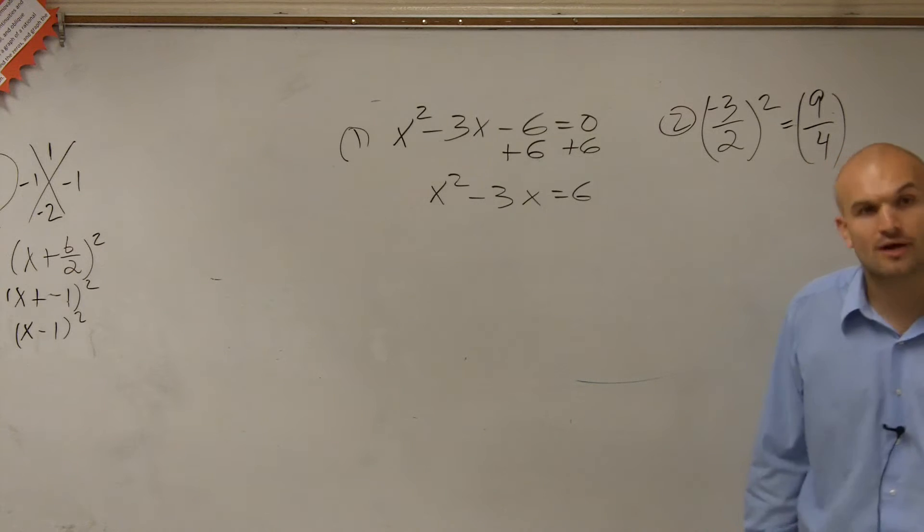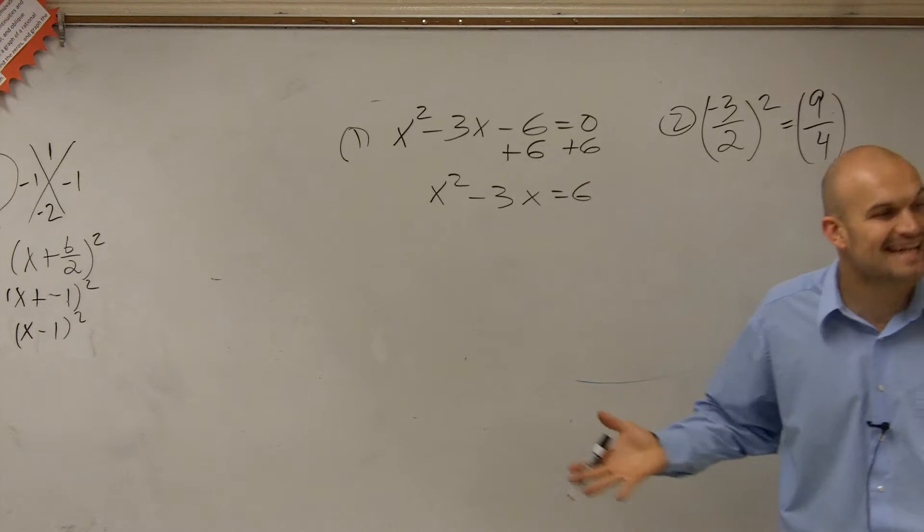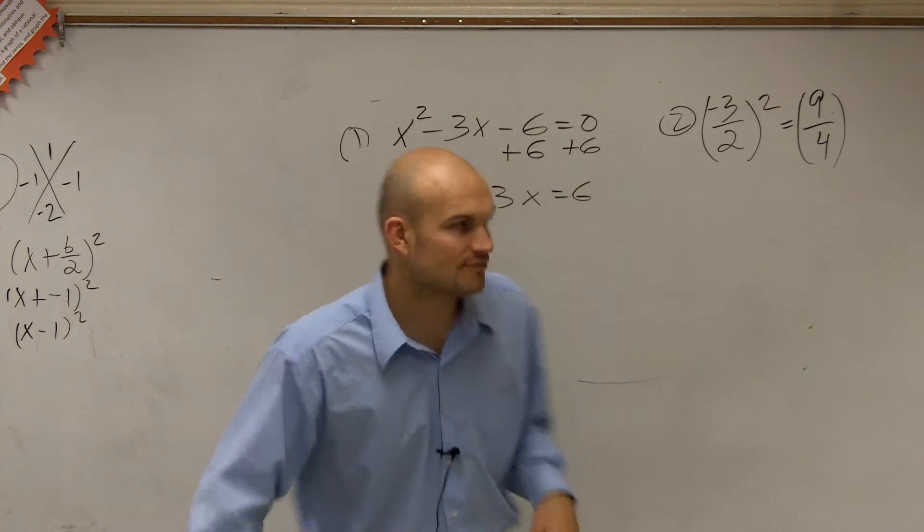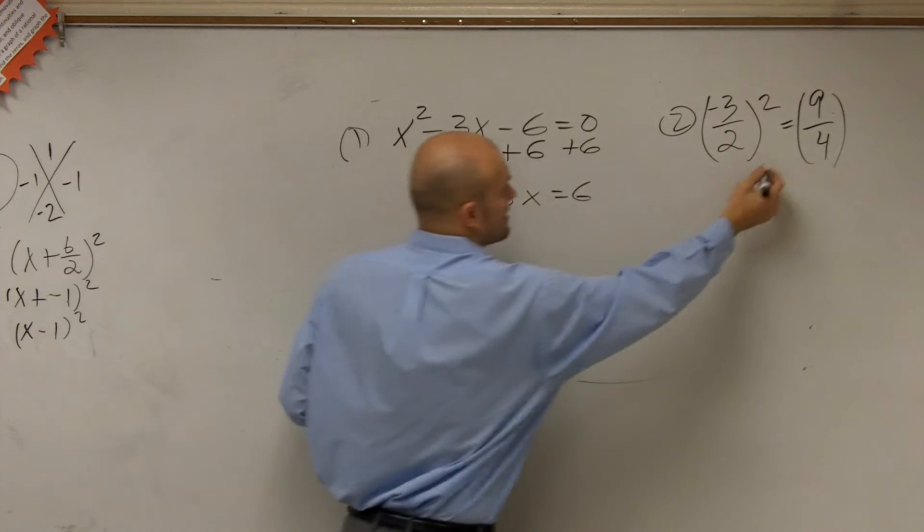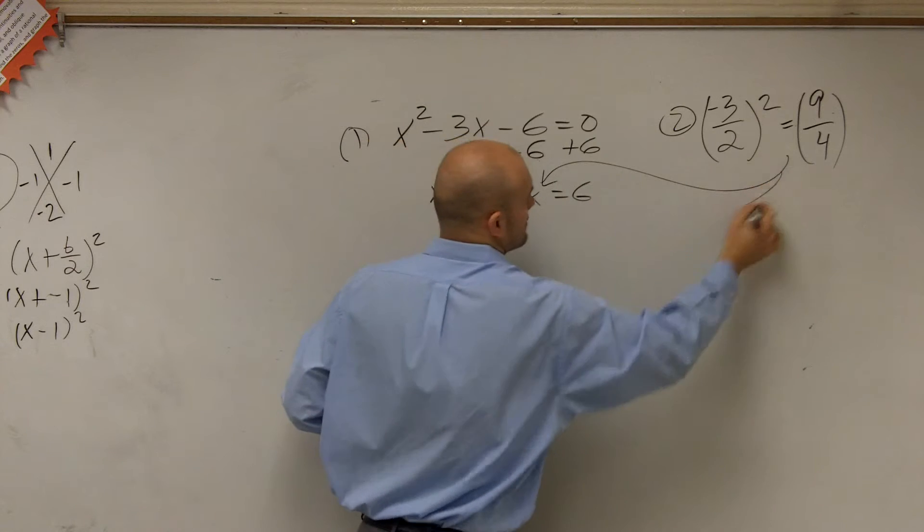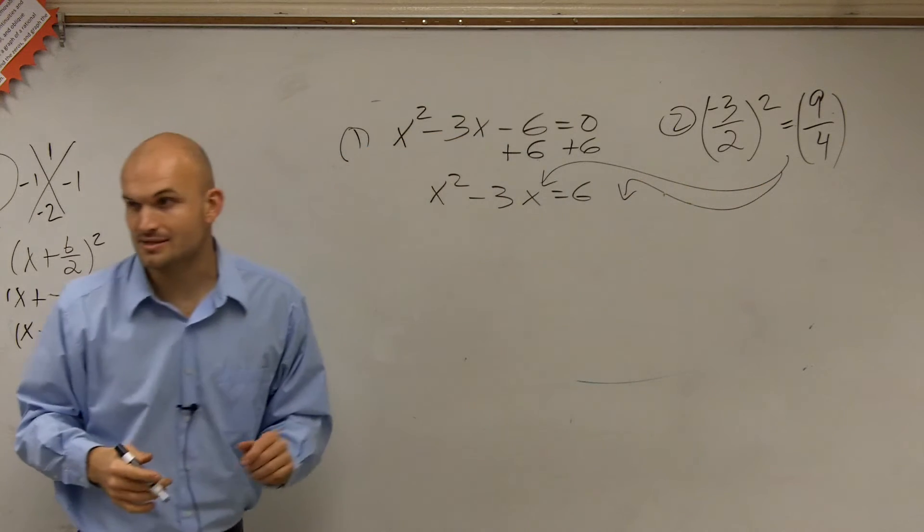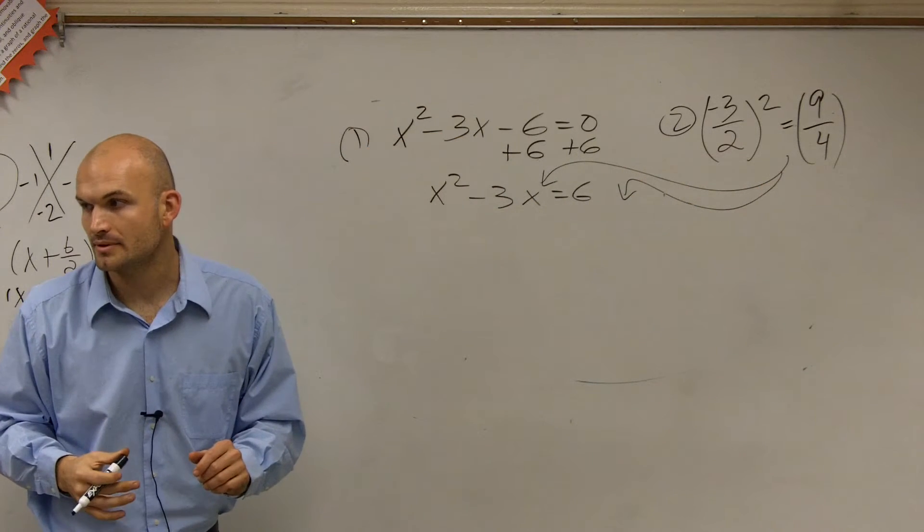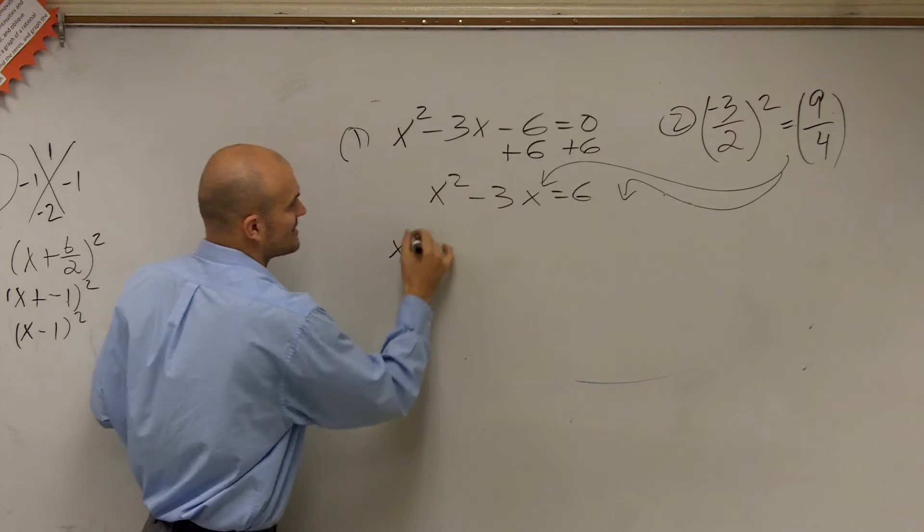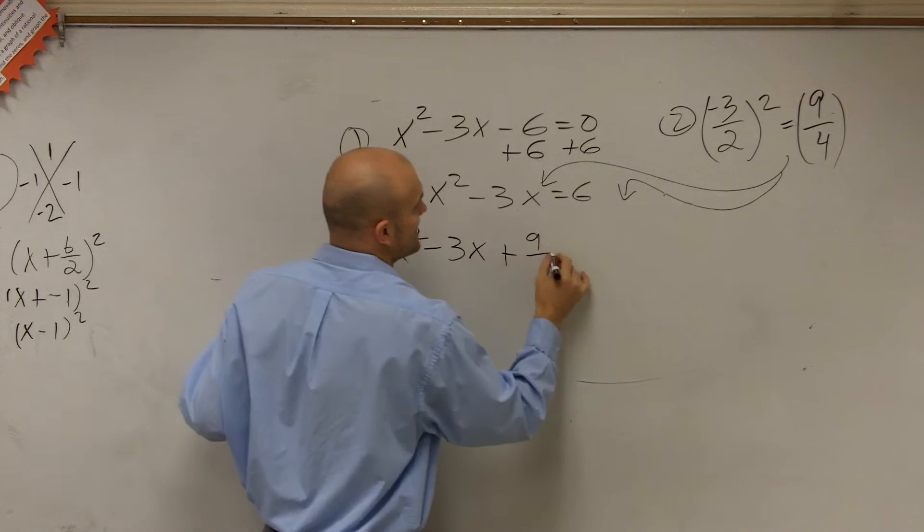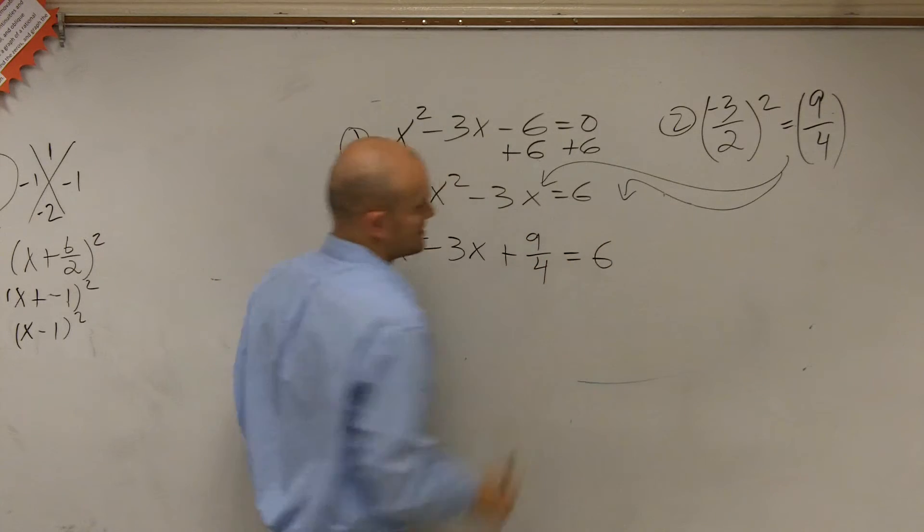Do not give me a decimal. Leave it in fractional form. So now, what do we do? We take this and we add it to both sides. You have to nominate it. The whole fraction. So now what we're going to have is x squared minus 3x plus 9 over 4 equals 6.